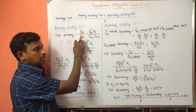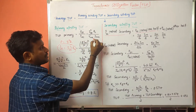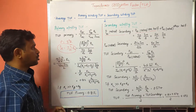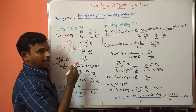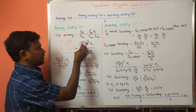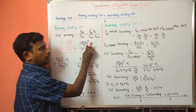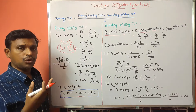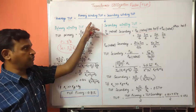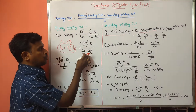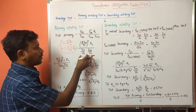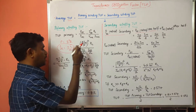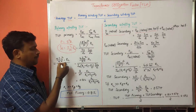Now, what is the AC power? P_AC is nothing but V_RMS into I_RMS. The DC current I_DC is equal to 2I_m / π for the full wave rectifier. So substituting that, the numerator becomes (2I_m / π)² × R_L, which equals 4I_m² / π² × R_L. For the denominator, V_RMS = V_m / √2 and I_RMS = I_m / √2, so P_AC = (V_m / √2)(I_m / √2) = V_m × I_m / 2.